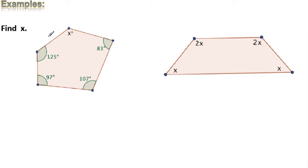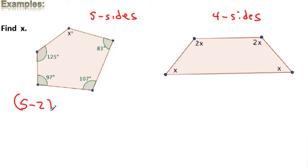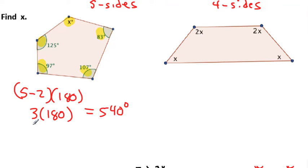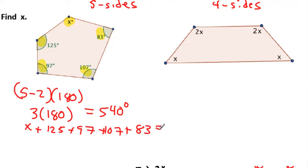We're going to look at these two examples here — you first have to count the number of sides. In this example, this is a pentagon — there are five sides. And in this example, there are four sides — it's called a quadrilateral. So in the pentagon, five sides, the total number of degrees in the interior is five minus two times 180. You don't have to draw the triangles because we have the formula now. That's just three times 180, which equals 540 degrees. So how do we solve this problem? We're going to create an equation. All these angles — that angle and this angle and this angle — should add up to 540 degrees. So we write: X plus 125 plus 97 plus 107 plus 83 should all equal 540 degrees.